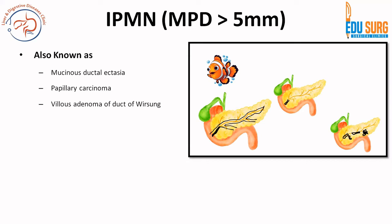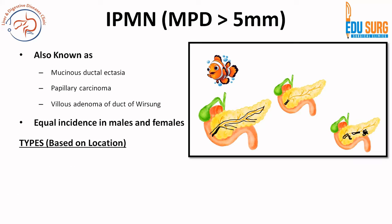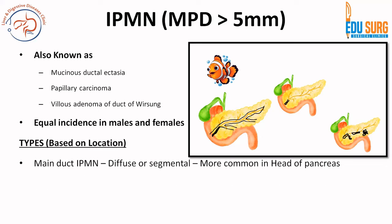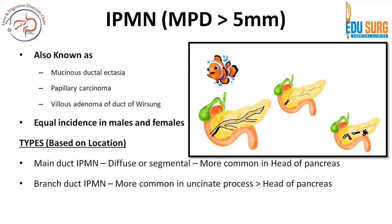IPMN is also known as mucinous ductal ectasia, papillary carcinoma, or villous adenoma of the duct of Wirsung. Remember that IPMN is different from all other cystic lesions because the incidence is equal in males and females. Based on location, it can be diffuse or segmental main duct IPMN, more common in the head of the pancreas; branch duct IPMN, more common in the uncinate process; or mixed IPMN involving both main duct and branch duct.